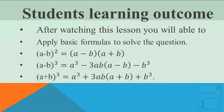The basic formulas are: first, (A-B)² is equal to (A-B) into (A+B). Second, (A-B)³ is equal to A³ - 3AB(A-B) - B³. Third, (A+B)³ is equal to A³ + 3AB(A+B) + B³.